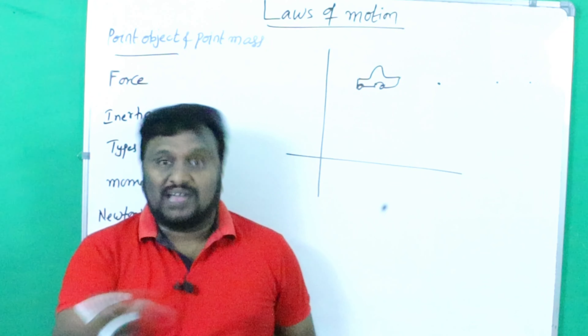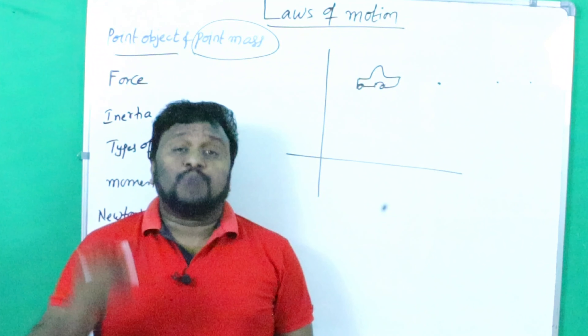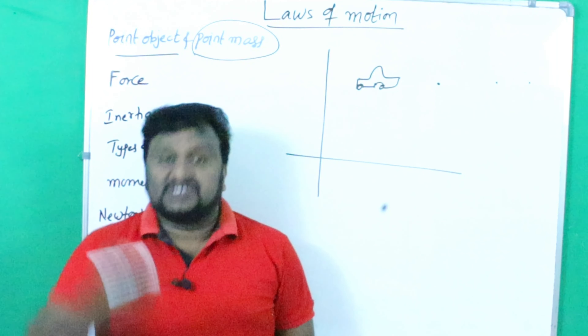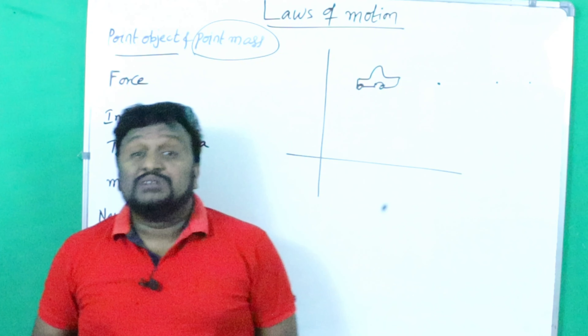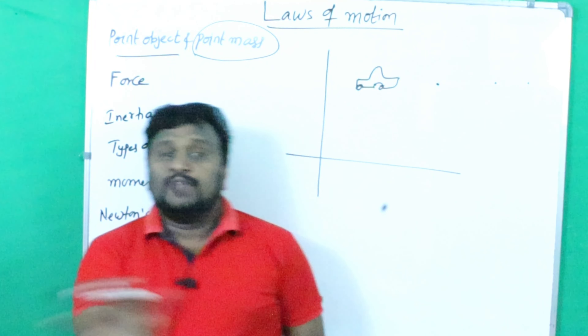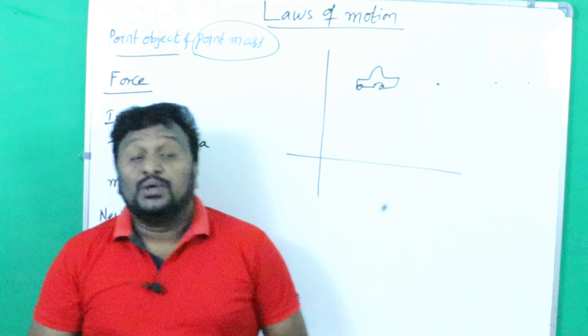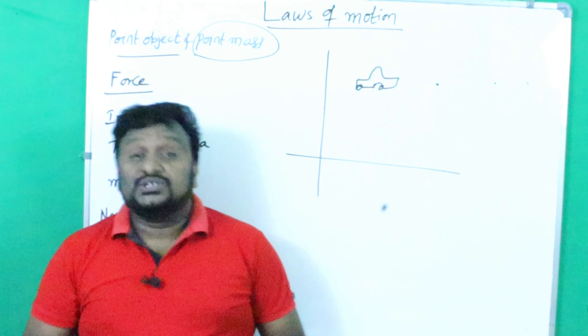The object which covers more distance than its size in a particular time should be taken as the point object — the object which covers a distance in a particular time that is more than its size is called the point object. Now, what is meant by point mass? In general, the term 'point mass' is used to solve problems in physics. Point mass means it is dimensionless — zero dimensions. The mass which has zero dimensions should be taken as the point mass. This is the clear difference between point object and point mass.